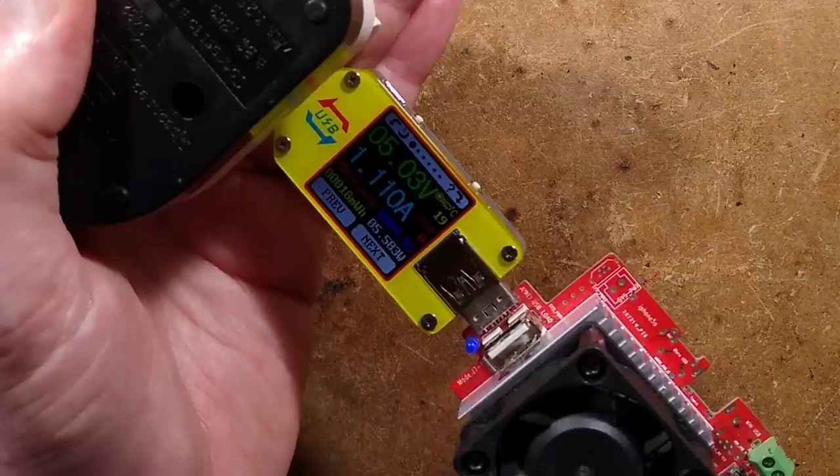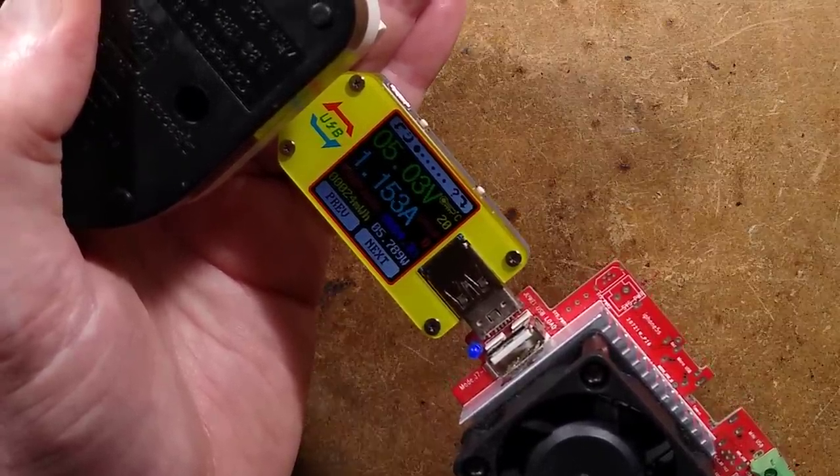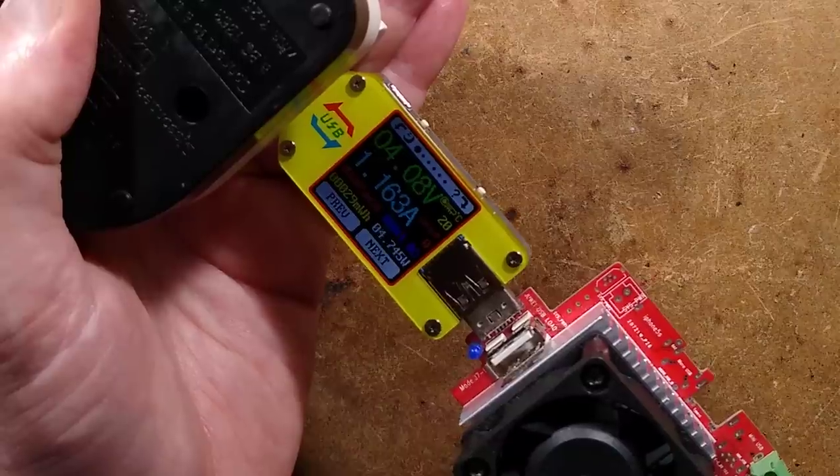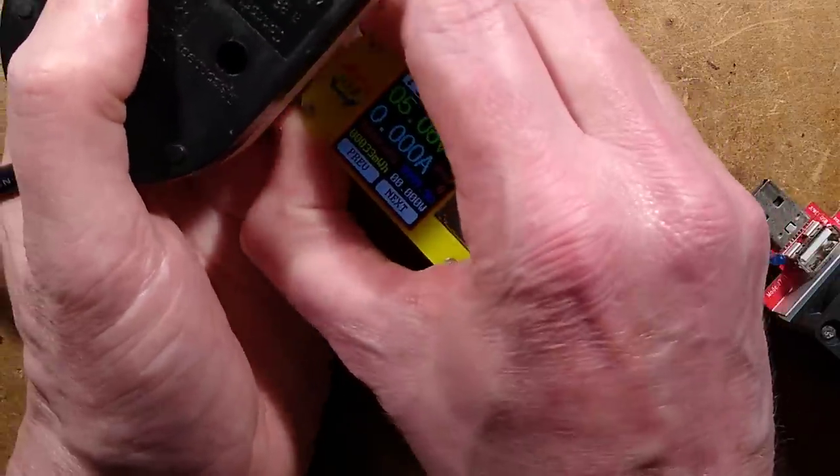So let's keep going and I'll use the finer control. 1.1 amp, 1.2, 1.3, 1.4, 1.5, still holding 5 volts, 1.6, and it cuts out. So say 1.16 amps, and then it cuts in and out.